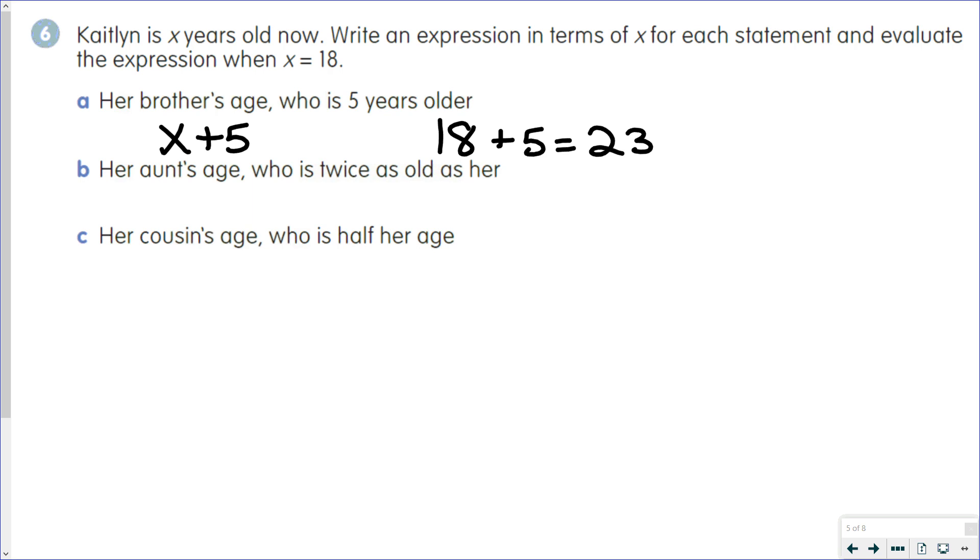Her aunt's age, who is twice as old as her. So we could have x times 2. We could do 2 times x, or we could do 2x. Any of those would work here. And we would do 18 times 2, which makes her aunt 36.